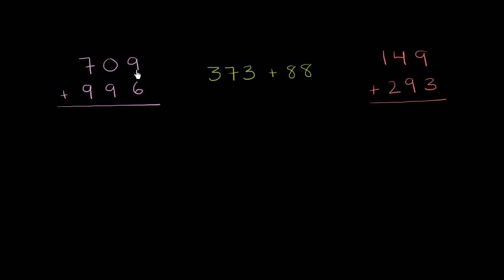We have 9 plus 6, 9 ones plus 6 ones. Well, 9 plus 6 is 15. We could write the 5 in the ones place and then carry the 1. But what did we just do? What does this 1 represent?